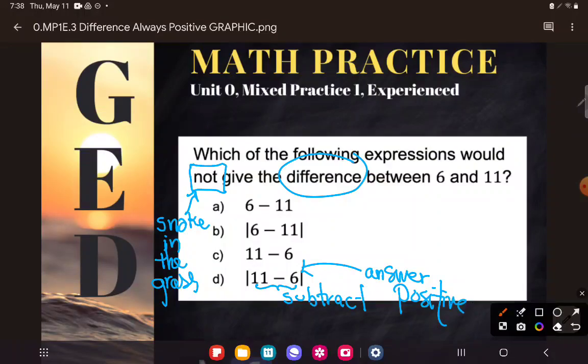Absolute value bars will make whatever's inside of them, the answer to whatever's inside of them, positive. So that being said, D is a right answer and so that's not what I want.